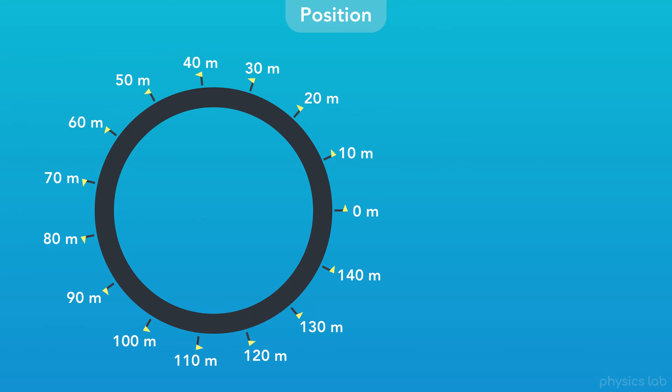So what would be the length of the entire road? The road is a circle, and the circumference of a circle, c, is pi times the diameter, or 2 times pi times the radius.